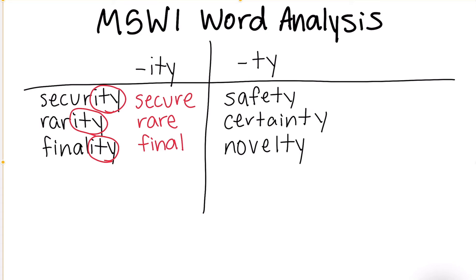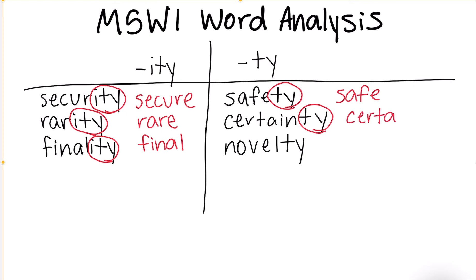What about safety? What do we think our base word was? Our suffix was T-Y, so our base word was safe. What about certainty? The suffix was T-Y, so what was the base word? The base word is certain.